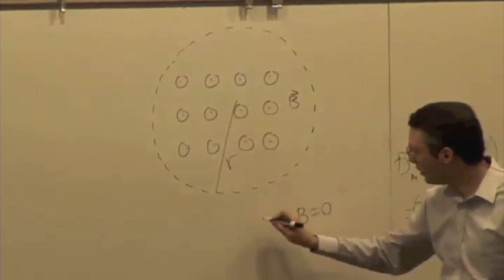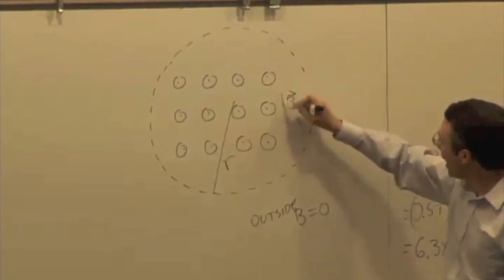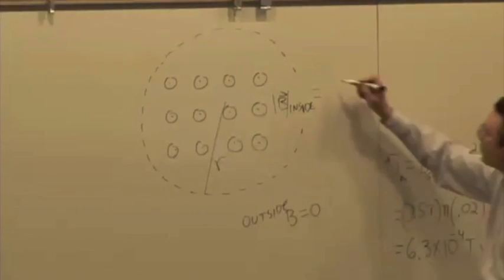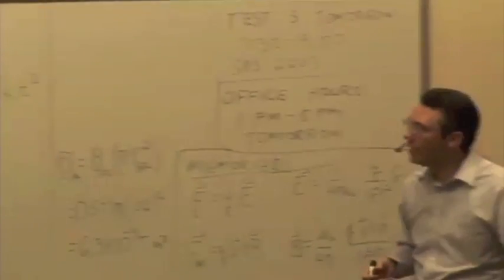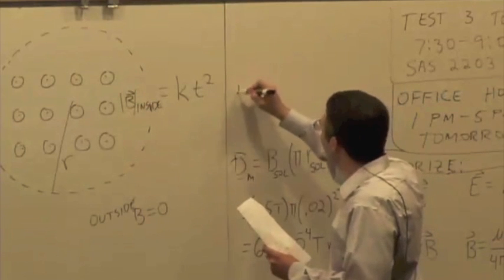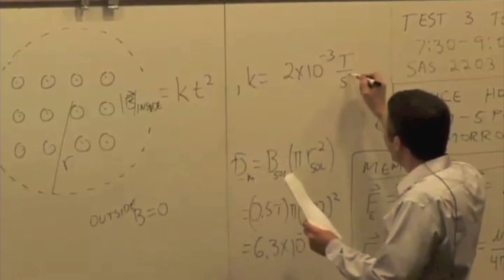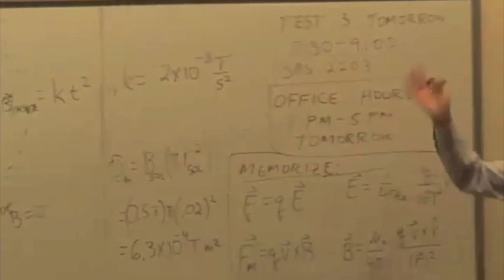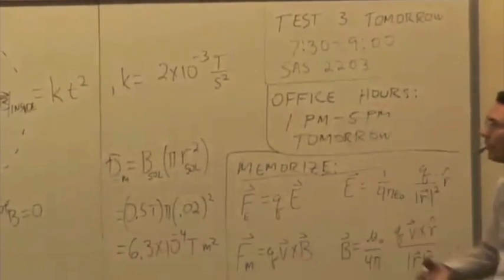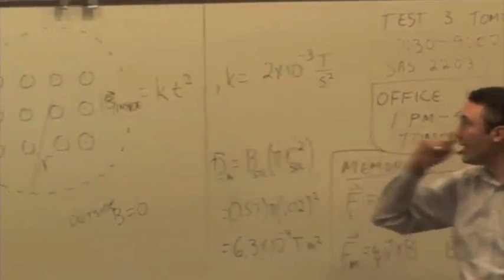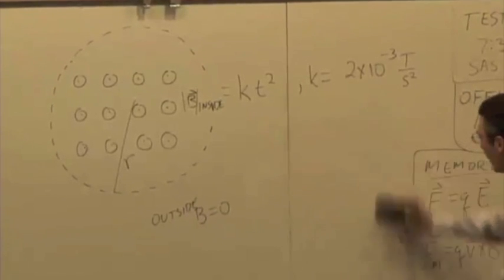Inside, the magnitude of the magnetic field is given by a function that has an explicit relationship with time. It's increasing as T squared, where T is time and K is just a constant. Let's say K is equal to 2 times 10 to the minus 3 Tesla per second squared. For example, if T equals zero, B is equal to zero. If T equals one second, B would be 2 times 10 to the minus 3 Tesla. At T equals two seconds, it would be 8 times 10 to the minus 3 Tesla. So it's increasing with the square of time.